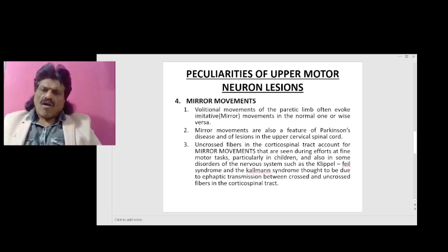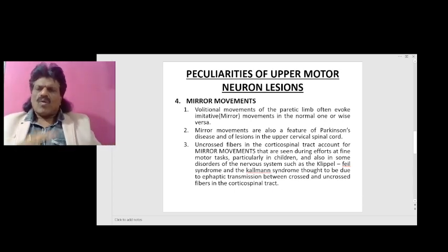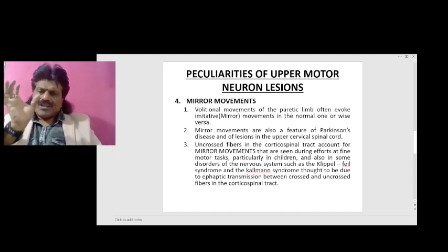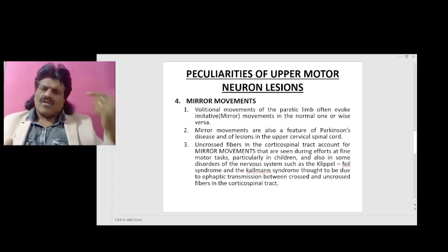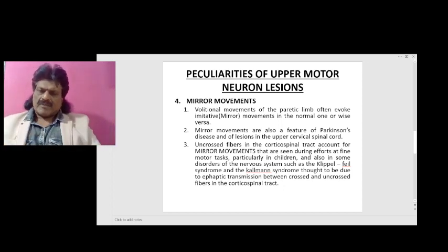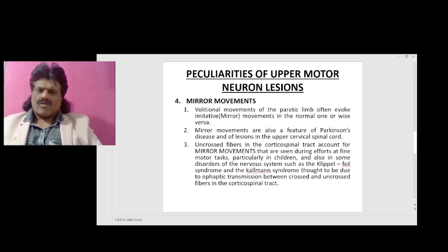Volitional movements of the paretic limb often evoke imitative or mirror movements in the normal one, or vice versa. Mirror movements are also a feature of Parkinson's disease and lesions in the upper cervical spinal cord.